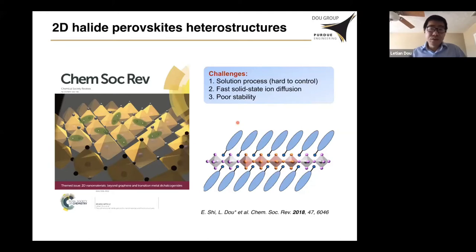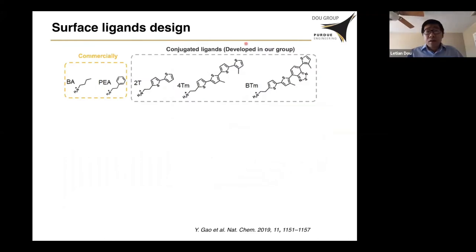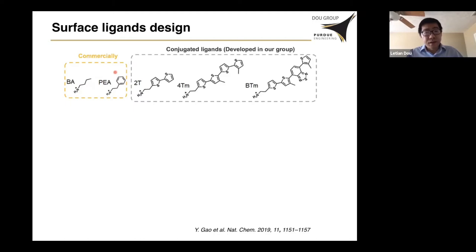Here I will introduce some of our recent work in this direction. In our first work, we worked on the ligands. We found these ligands may not be good enough. The commercially available ligands that people have used for a long time — BA represents butylammonium, which is a linear carbon chain, and PEA is phenylethylammonium with a benzene ring — but those molecules are relatively small and may not be enough to protect the perovskite. They are also insulators and do not have charge transport or optical properties themselves.